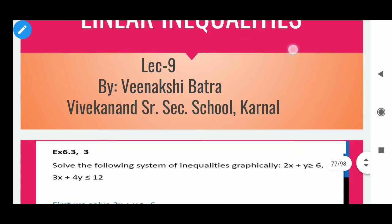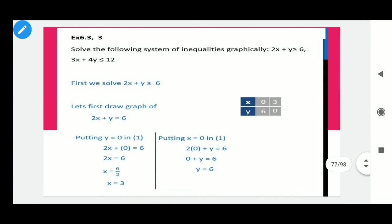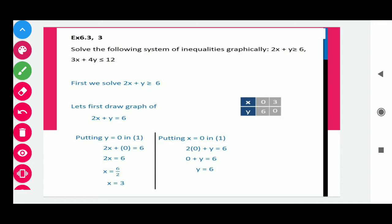Question number 3: solve the following system of inequalities graphically, where 2x + y ≥ 6 and 3x + 4y ≤ 12. In this question we have two inequalities and we have to find the optimal shaded region, so let's start.